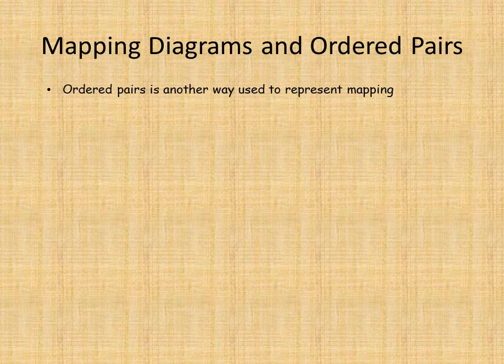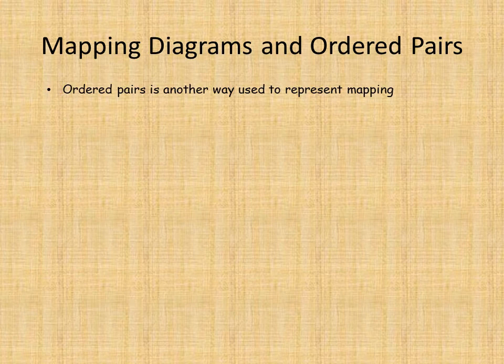An ordered pair is just another way to represent mapping. If you have not watched the first video I created on mapping diagrams, I will link it above — I suggest you go ahead and watch that video before proceeding with this one. Ordered pairs are another way used to represent mapping, and another word for mapping is matching.